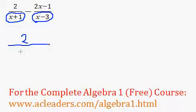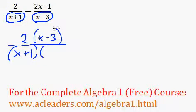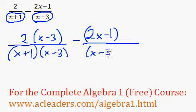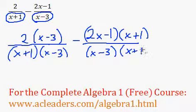What we will need to do is multiply top and bottom of the first fraction by x minus 3. So x minus 3 over here, x minus 3 over there. And we will also multiply the top and the bottom of the second fraction by x plus 1. That way, we have the common denominator of x plus 1 times x minus 3.